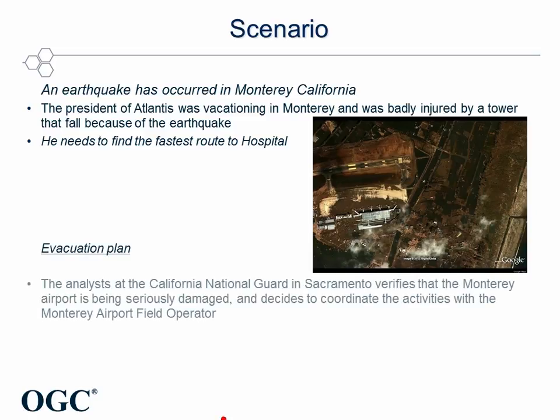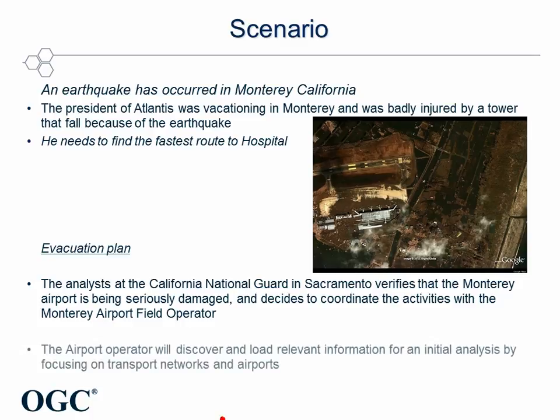The evacuation plan is coordinated by the California National Guard in Sacramento. The analyst there verifies that the Monterey Airport is being seriously damaged and decides to coordinate operations with the Monterey Airport field operator. This demonstration will focus on the activities performed by the airport operator.